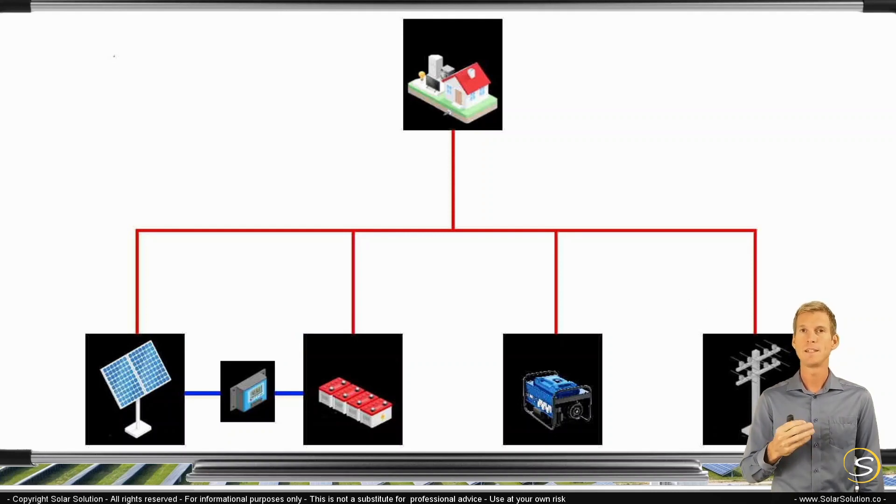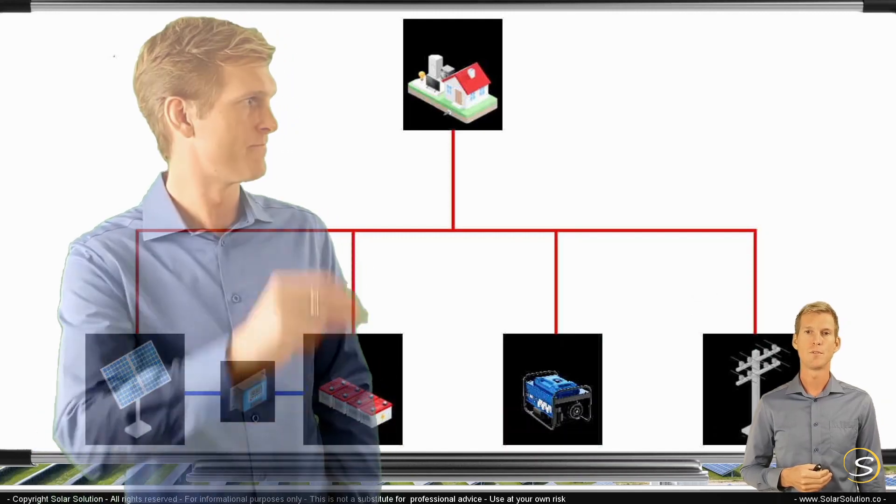Now, you can do either or. It really depends on your system and on your preferences, which one you prefer. Typically, the larger systems would go for AC coupled, the smaller ones for DC coupled, or the systems which primarily function as an off-grid solar energy system, they would typically also go for the DC coupled. You can go with either or, the AC coupled or the DC coupled.